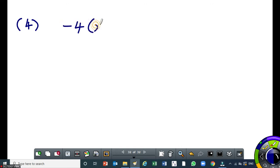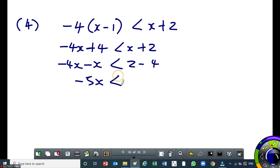Minus 4 times x minus 1 is less than x plus 2. So, we want to solve for x. We remove brackets on the left, we get minus 4x plus 4 is less than x plus 2. Then we take the x to the left, we get minus 4x minus x is less than... Now, we take the positive 4 to the right, we get 2 minus 4.